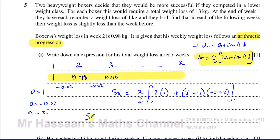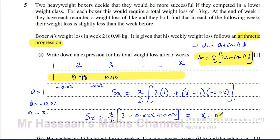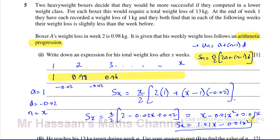I'm going to simplify it because we might need it for further parts of the question. Dealing with what's inside the bracket: 2 times 1 is 2, then negative 0.02 times X is negative 0.02X, and negative 0.02 times negative 1 is plus 0.02. Multiplying everything by X over 2 gives us X minus 0.01X squared, plus 0.01X, which simplifies to 1.01X minus 0.01X squared. That's the sum of the first X terms — the answer to part one.